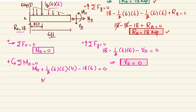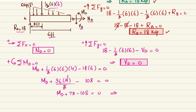Writing it out: MD + (1/2 × 6 × 6) × 4 − 18 × 6 = 0, which gives MD + 72 − 108 = 0. Therefore MD = 36 kip·feet.